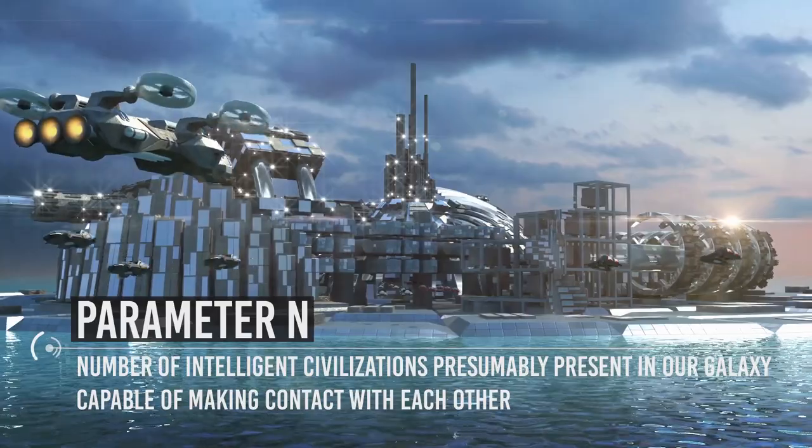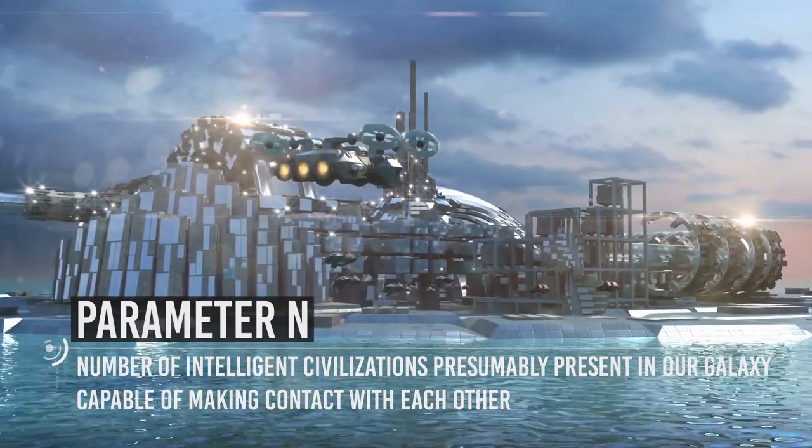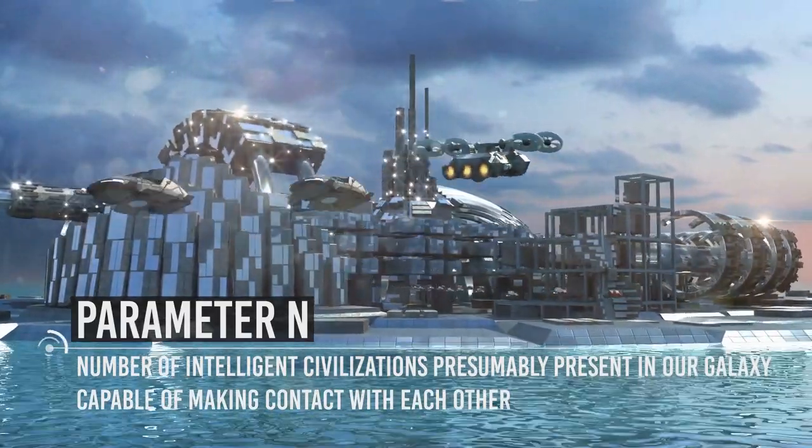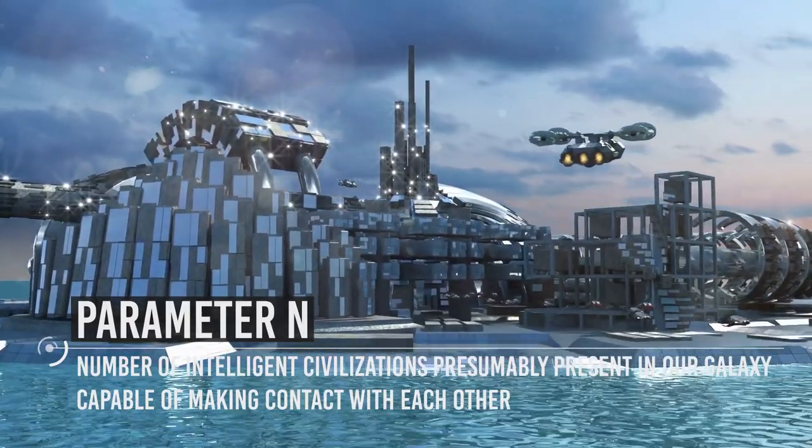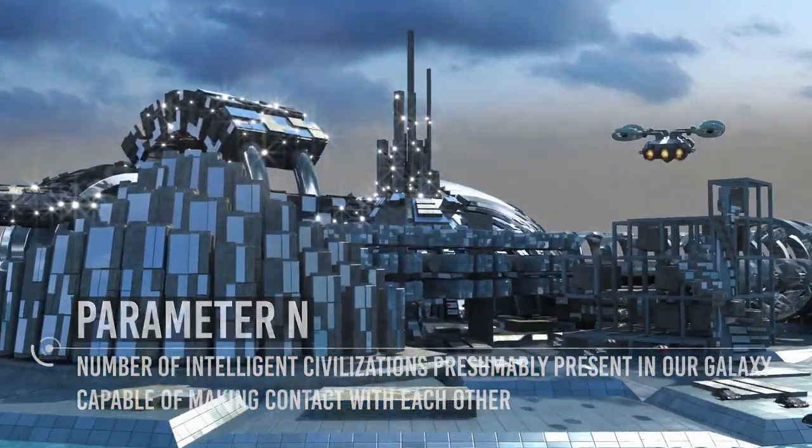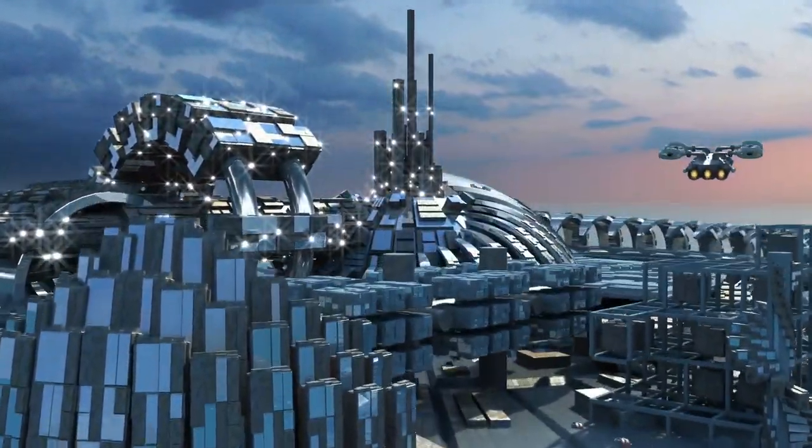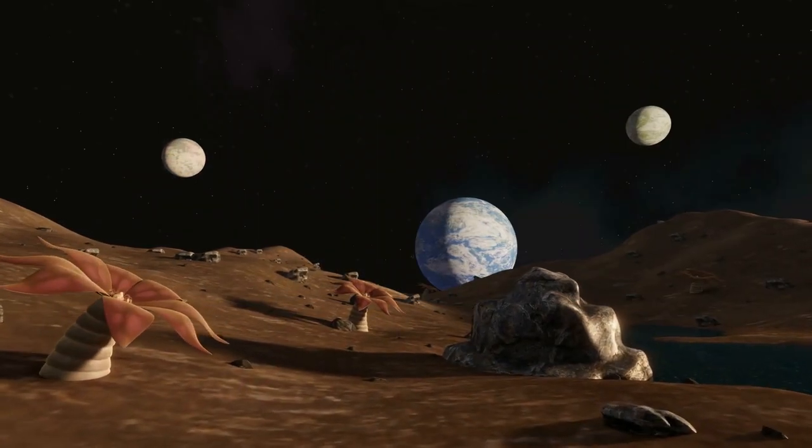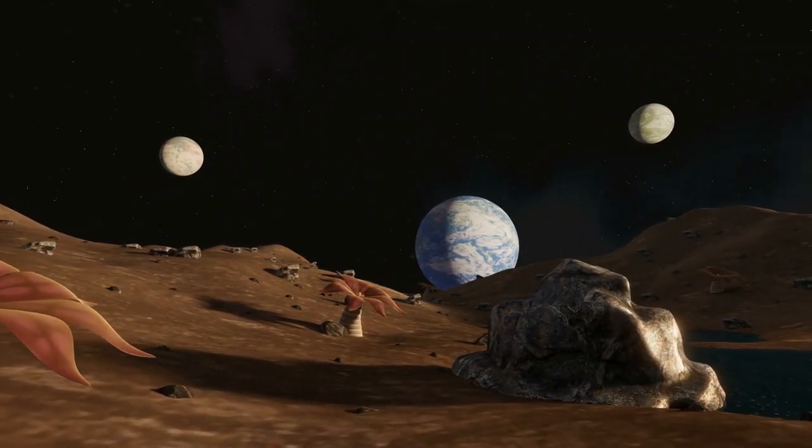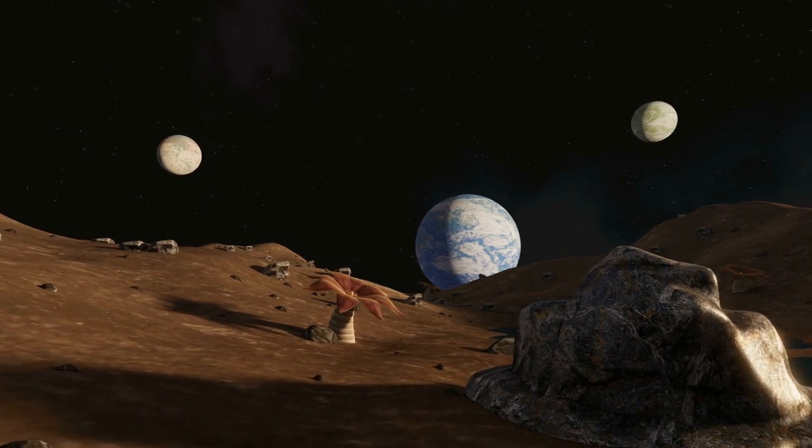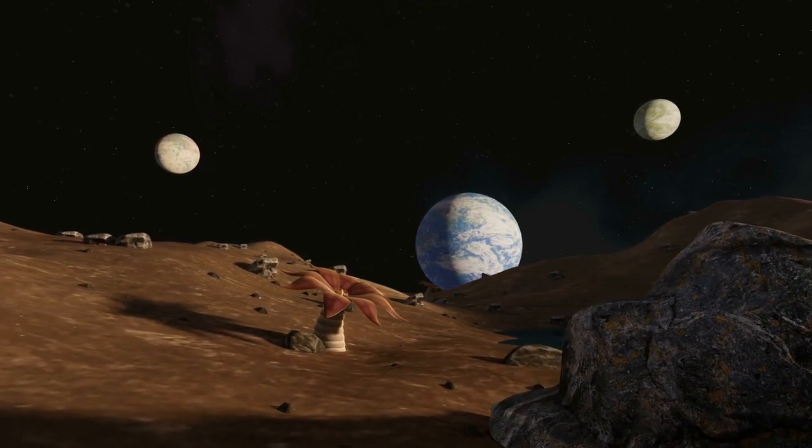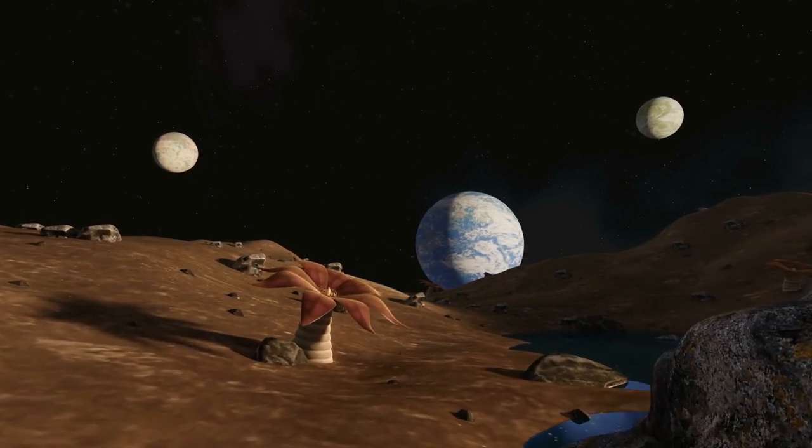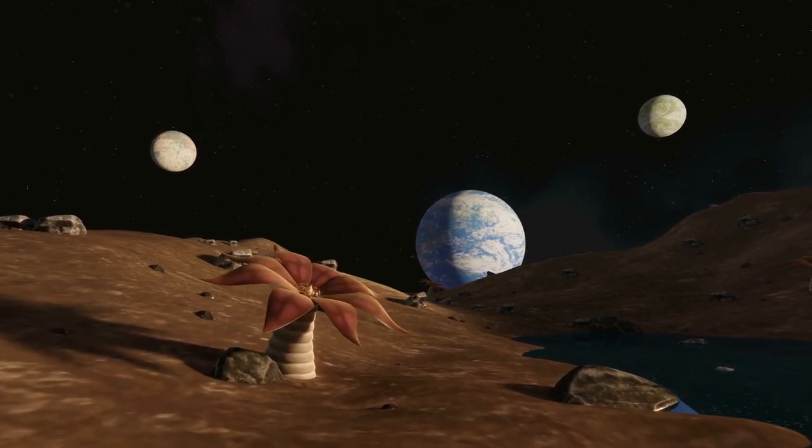N is the number of intelligent civilizations presumably present in our galaxy, capable of making contact with each other. We must pay attention to the fact that here we are talking about civilization and not about life in the most general sense of the term. The reason for such a distinction made by Drake probably lies in the current technological impossibility to go and see for oneself if there are forms of life elsewhere.